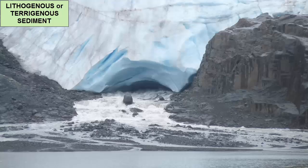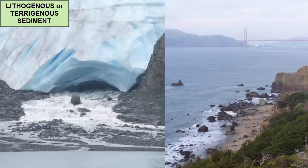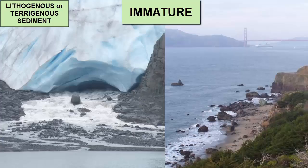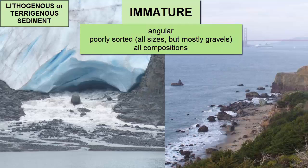When dropped by glaciers, these sediments can be quite large and come relatively preserved from the backcountry far inland. We call both of these types of sediments immature because they haven't been modified much by travel. They can be angular and poorly sorted, consisting of grains of all compositions, shapes, and sizes — mostly gravels.